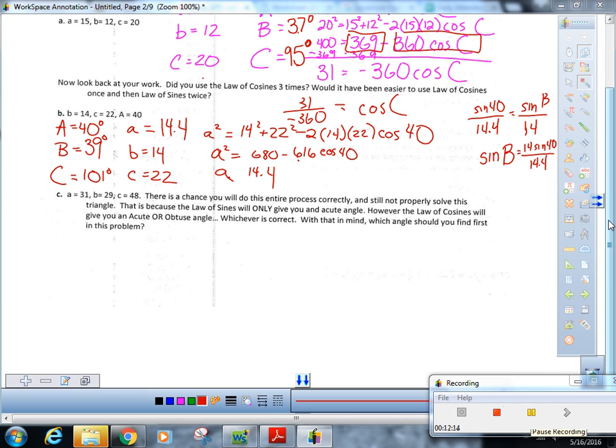All right, so Task C is not—we're not going to do this one. There's nothing to do. We just have to answer a question. There's a chance you will do this entire process correctly and still not properly solve this triangle. That is because the Law of Sines will only give you an acute angle. Okay, however, the Law of Cosines will give you an acute or obtuse angle. So with that in mind, which angle should you find first in this problem? Which is what? Angle C. Got it.